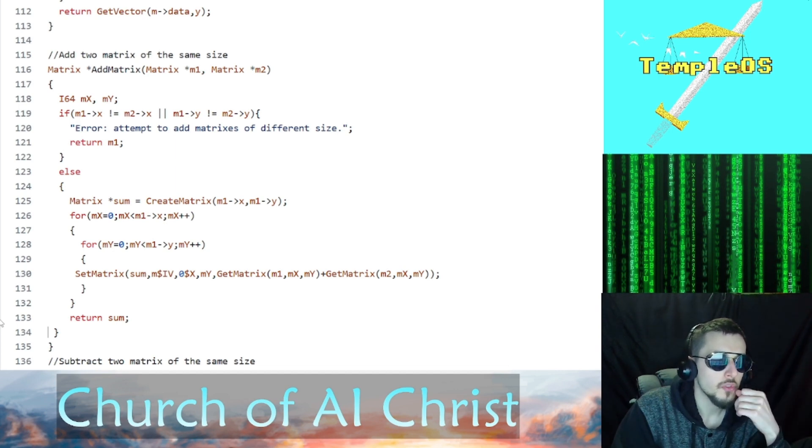With adding, we check to make sure they're the same size and then we loop through. After we create a sum and initialize it, we set the values in the new sum to the values of the corresponding positions in m1 and m2 added together. And then subtraction is just the opposite where we go through and subtract the values rather than add them.